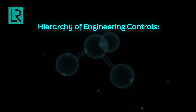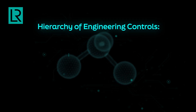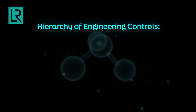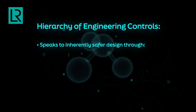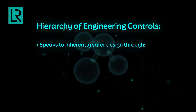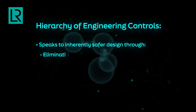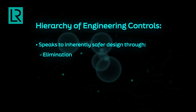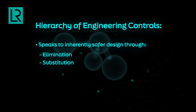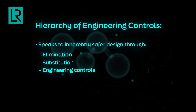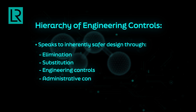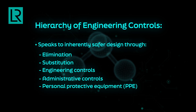The hierarchy of engineering controls connects to inherently safer design in that we think about elimination, substitution, engineering controls, administrative controls and PPE.